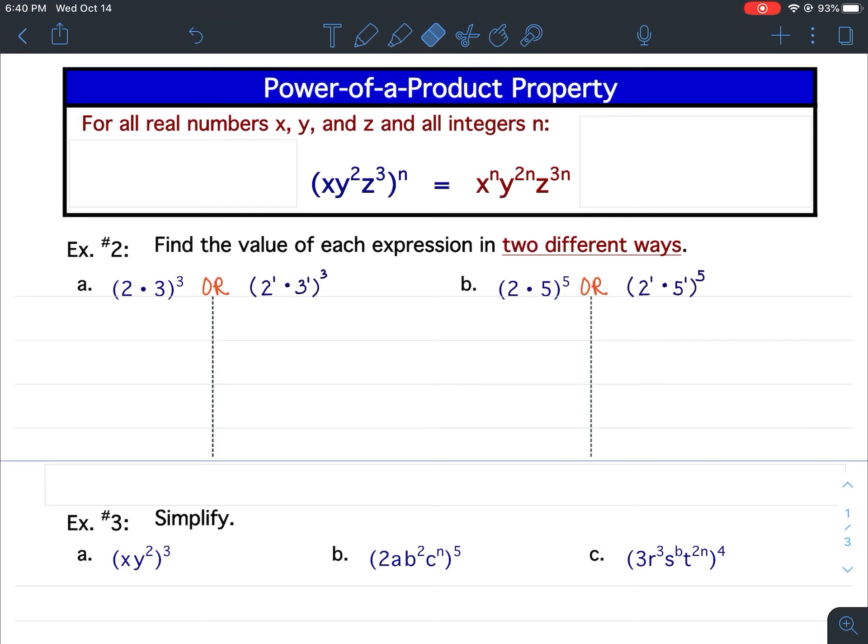What we did here was we distributed the outside exponent. So I'm going to put a 1 on this x, and that means I take this outside exponent, and I first multiply it by the 1, then I multiply it by the 2, then I multiply it by the 3.